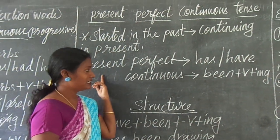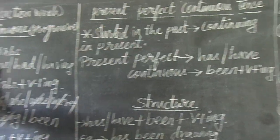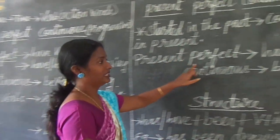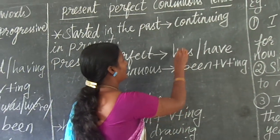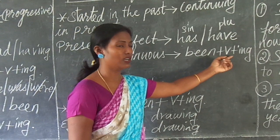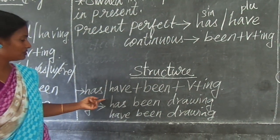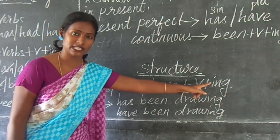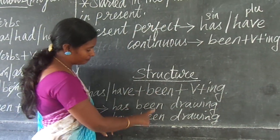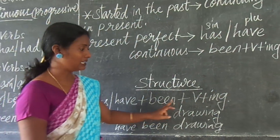And here, for the present perfect, we need only has or have. For perfect it will take have verbs — have, has, had, or having — but we need only have and has for present perfect. Has is singular and have is plural. For continuous, we need been plus verb plus ing. So the structure for present perfect continuous tense is: has or have plus been plus verb plus ing.